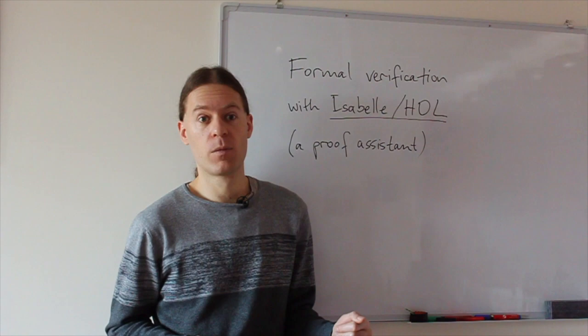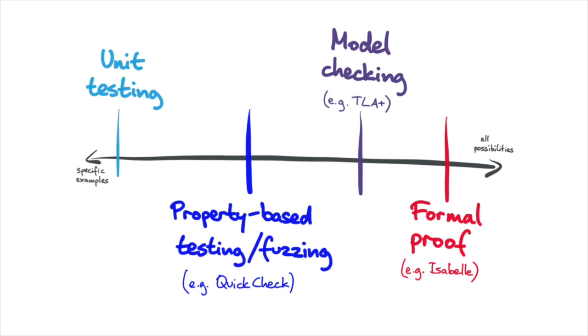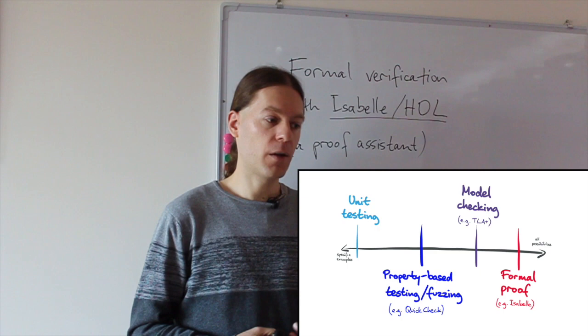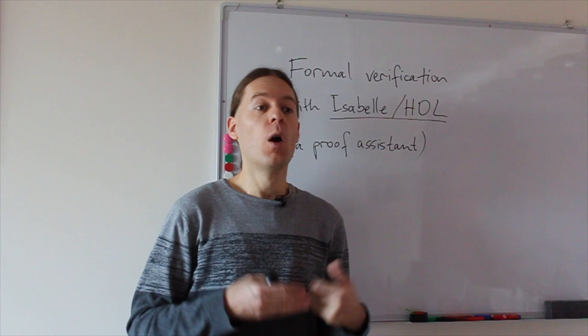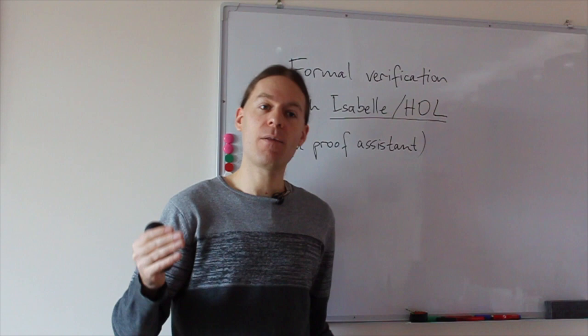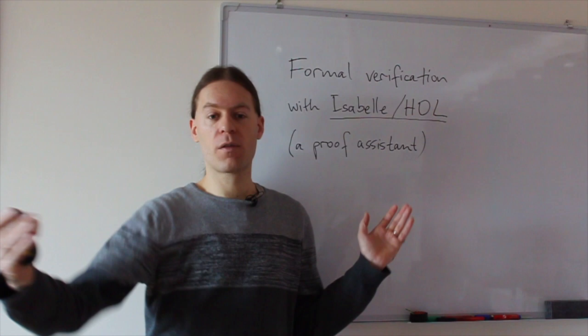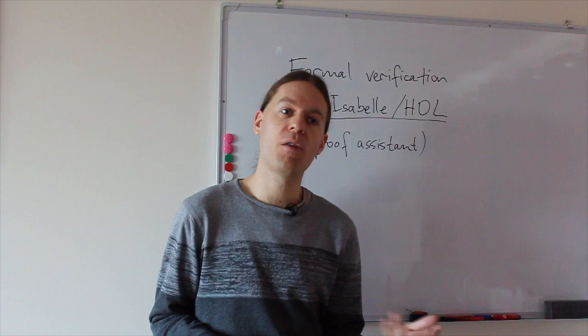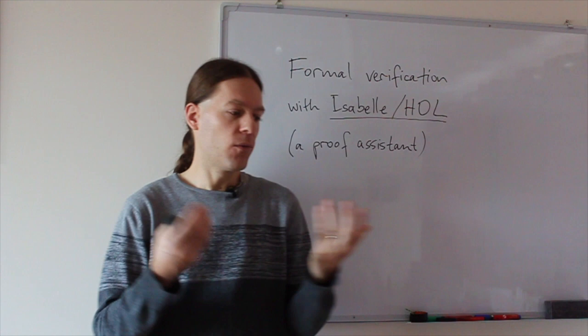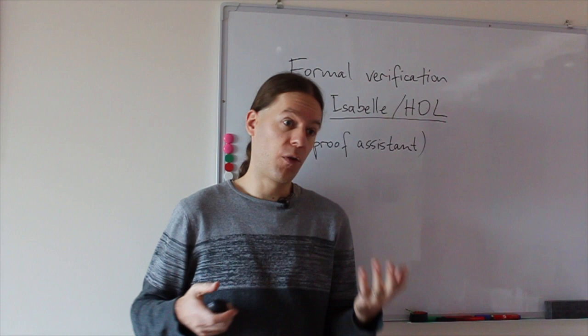What we want to talk about today is formal proof. The really interesting thing about formal proof is that we can reason about potentially infinite state spaces. In a distributed algorithm, with a proof we can reason about executions with any number of messages, without putting any upper bound on the number of messages sent. These executions can be arbitrarily long, involving an infinite number of possible states. With proof, we can show that in all of those infinite possible combinations, the right thing will always happen. This is what makes proof very powerful.